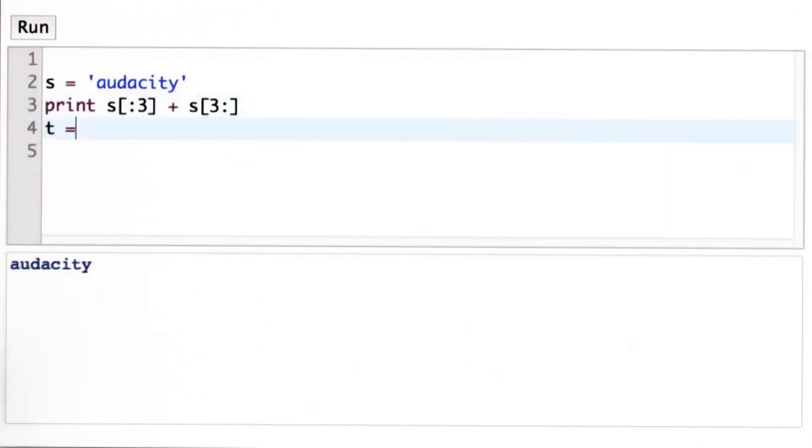And if we do this with a shorter string, let's initialize t to be the string "hi". We can print t[:3] plus t[3:]. We don't get an error. We get the string "hi" out.